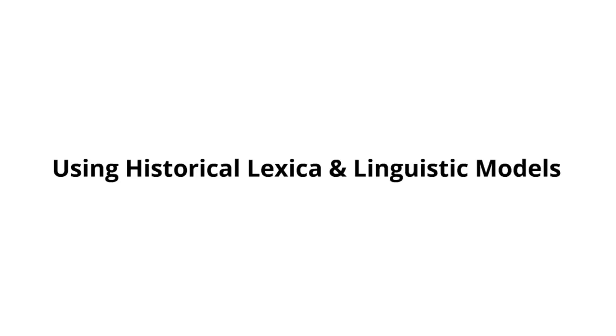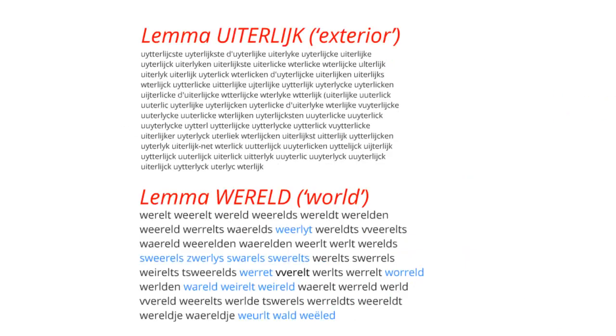Historical language is a challenge for both OCR and retrieval. Two simple examples from Dutch give an indication of the kind of historical language variation we are up against. A few orthographical rules would suffice to account for a large part of the variation encountered in the top example.